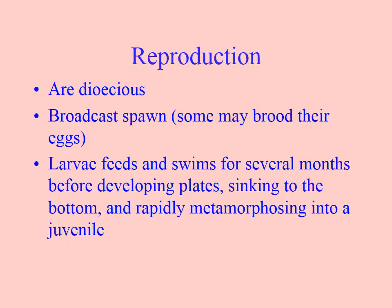In terms of reproduction, they are either male or female and most will broadcast spawn. The larva will swim for several months before developing plates, and when they develop plates they become heavy, sink to the bottom, and — as with all echinoderms — the adults are benthic.